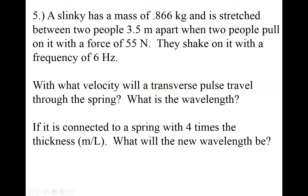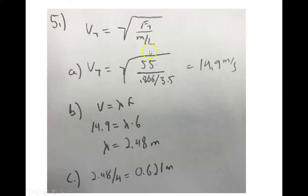Let's work a math problem. A slinky has a mass of 0.866 kilograms and is stretched between two people 3.5 meters apart. When they pull on it with a force of 55 newtons and shake it with a frequency of 6 hertz, what is the velocity of the pulse and the wavelength? The tension is 55 newtons, the mass is 0.866 kg, and the length is 3.5 meters. Solving with the square root formula gives a velocity of 14.9 meters per second.